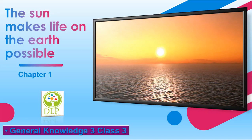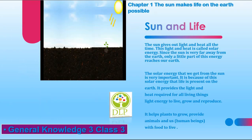Chapter 1: The Sun Makes Life on the Earth Possible. The Sun gives out light and heat all the time. This light and heat is called solar energy. Since the sun is very far away from the earth, only a little part of this energy reaches our earth. The solar energy that we get from the sun is very important. It is because of this solar energy that life is present on the earth.